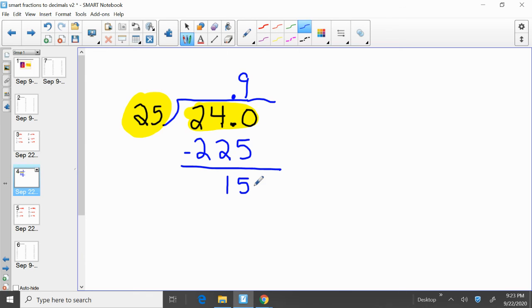So we still have a number to divide into, but twenty-five won't go into fifteen. So we put in another zero. Bring it down. Twenty-five divided into one hundred and fifty. How many times will twenty-five go into one hundred and fifty? Six times. So, twenty-five divided into twenty-four equals zero point ninety-six.